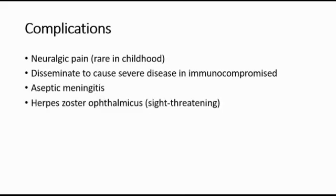There are some complications of shingles. Postherpetic neuralgia — neurologic pain that is rare in childhood — is a stabbing, burning, and often severe pain due to an irritated or damaged nerve. Shingles can also disseminate to cause severe disease in immunocompromised people. It can cause aseptic meningitis and also herpes zoster ophthalmicus, which threatens loss of sight.